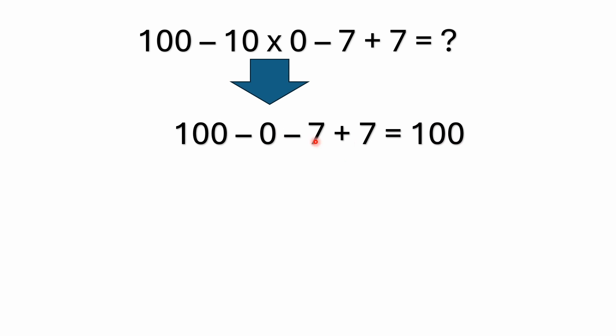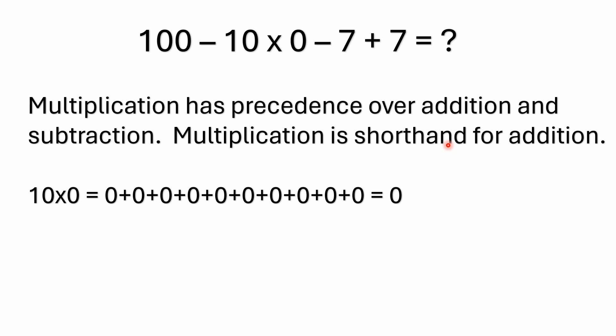Because minus 7 and plus 7 is nothing either, so it's 100 minus 0 minus 7 plus 7 just leaves you with 100. So a fairly simple problem here. The big thing to remember is that multiplication has precedence.